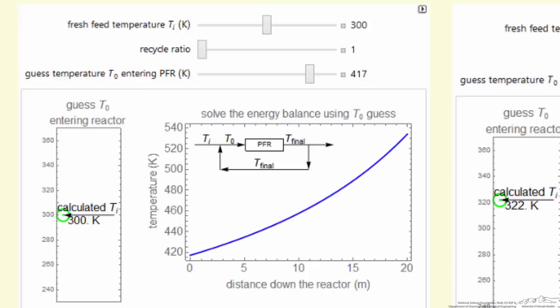For the case of low recycle ratio, notice there's a fairly large temperature change in the plug flow reactor. T0 is much higher than inlet temperature, 300 Kelvin here and 417 here.